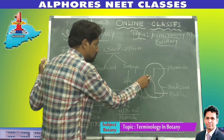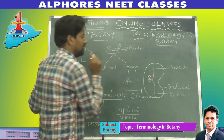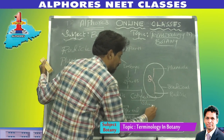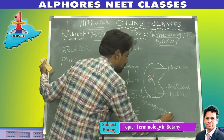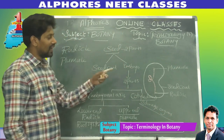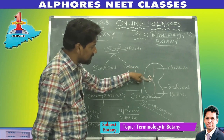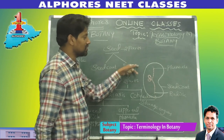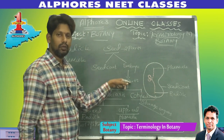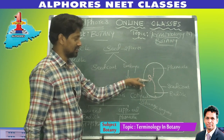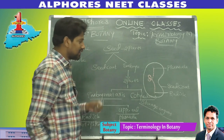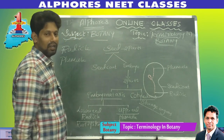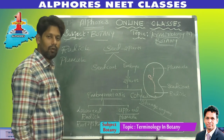The cotyledons in the diagram are storage organs. In this diagram, two cotyledons are present. If two cotyledons are present, the seed is called a dicotyledonous seed. If only one cotyledon is present, the seed is called a monocotyledonous seed.